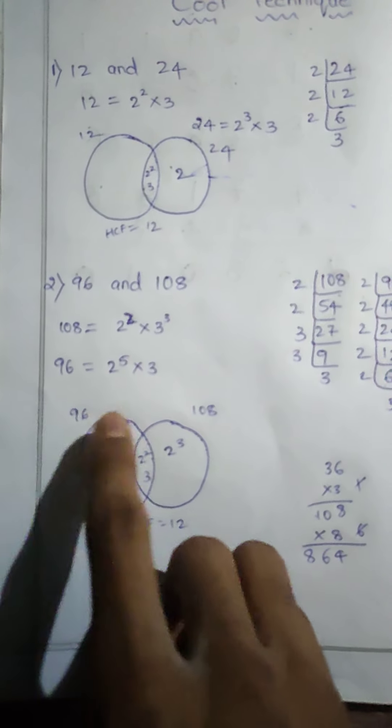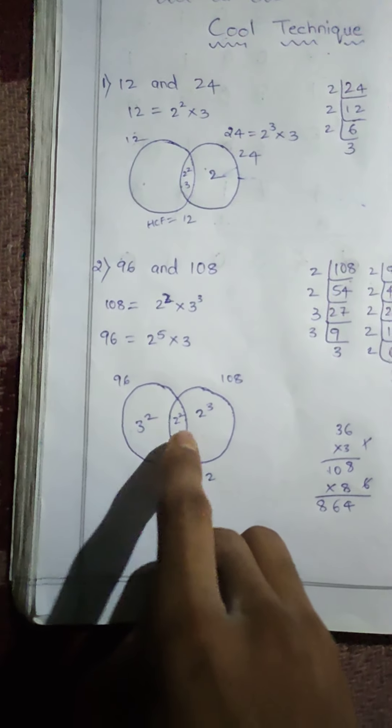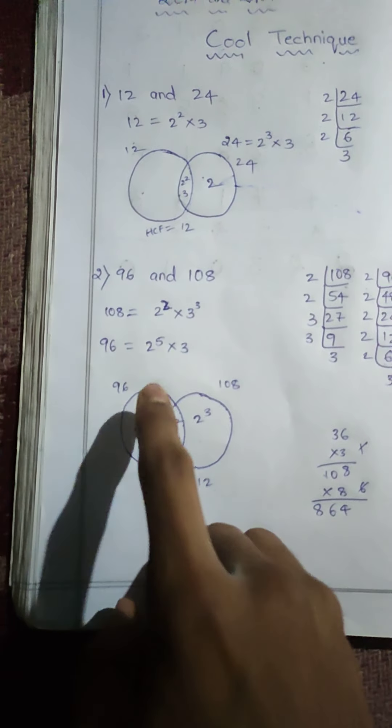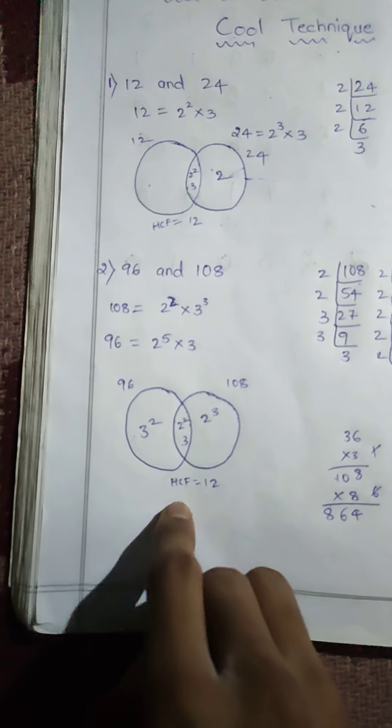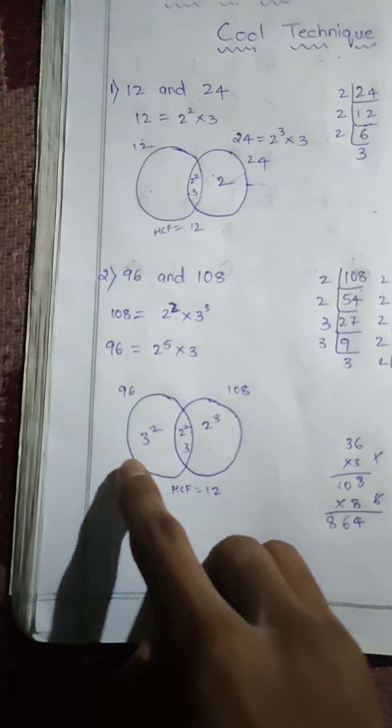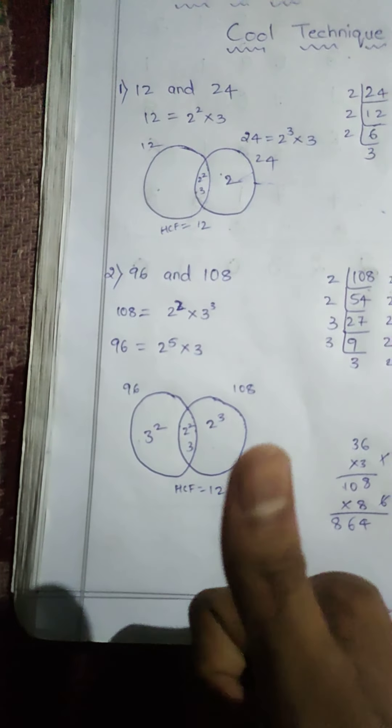Draw circles for both numbers: here 96, here 108. Write the common numbers of both numbers in the middle, which is HCF. If you multiply all the numbers, you get LCM. Let's try another example.